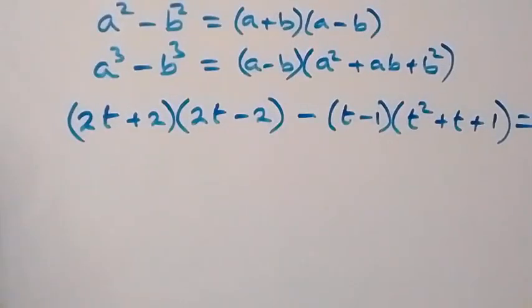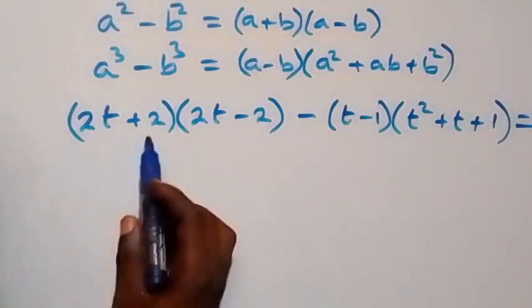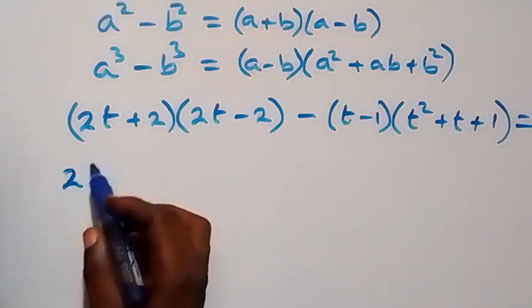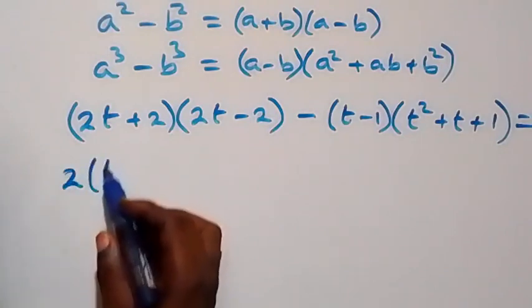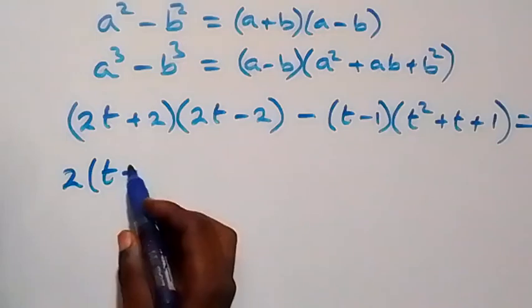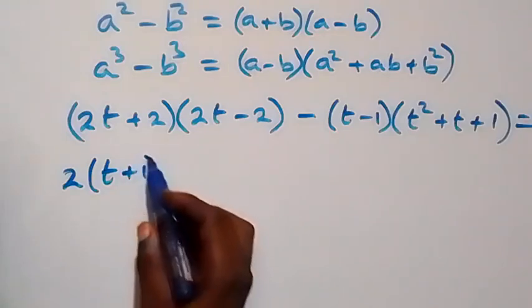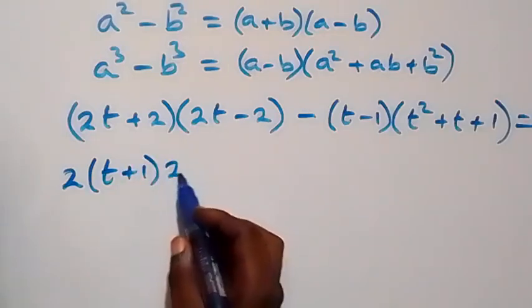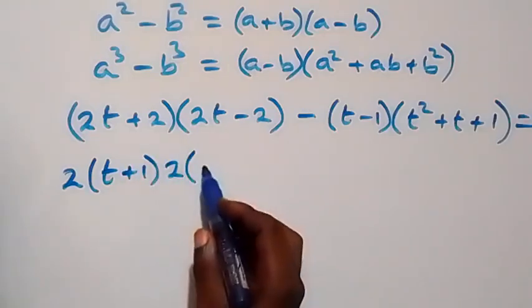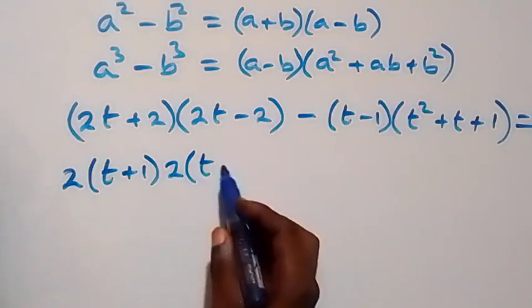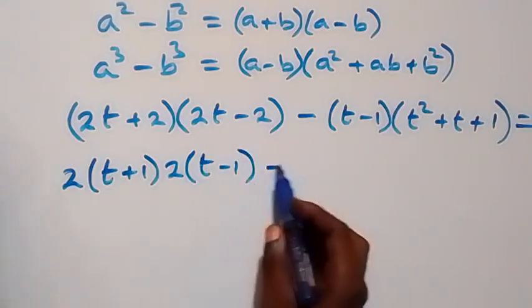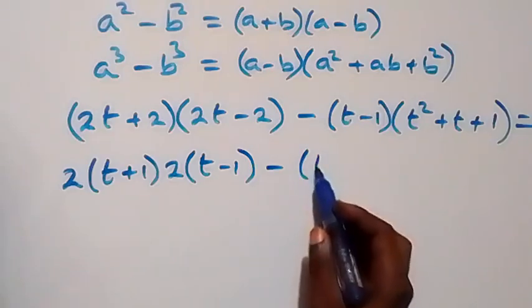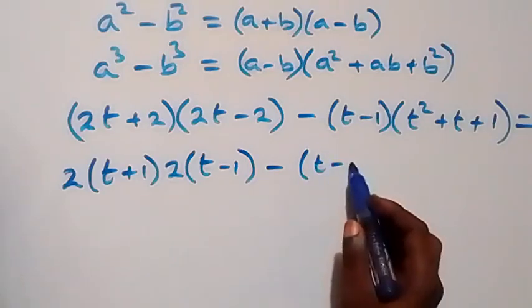We can see there is a factor of 2 common in each of the first brackets. Factoring out 2 gives 2(t plus 1) and 2(t minus 1), then minus (t minus 1), equals 0.